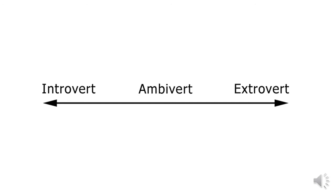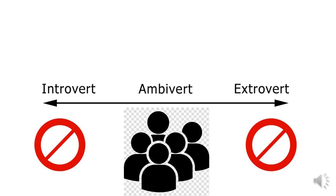Carl Jung's theory of introversion describes a spectrum with introversion on one end, extroversion on the other, and ambiversion in the middle of the two. Everyone falls somewhere on the scale, just not on either end. We are all ambiverts — no one can possibly showcase all introverted and extroverted qualities.